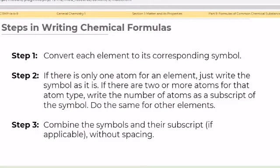Here are the several steps in writing chemical formulas. Step 1: Convert each element to its corresponding symbol. Step 2: If there is only one atom for an element, just write the symbol as it is. If there are two or more atoms for that atom type, write the number of atoms as a subscript of the symbol. Do the same for the other elements. Step 3: Combine the symbols and their subscript, if applicable, without spacing. Let us apply these steps in some examples.